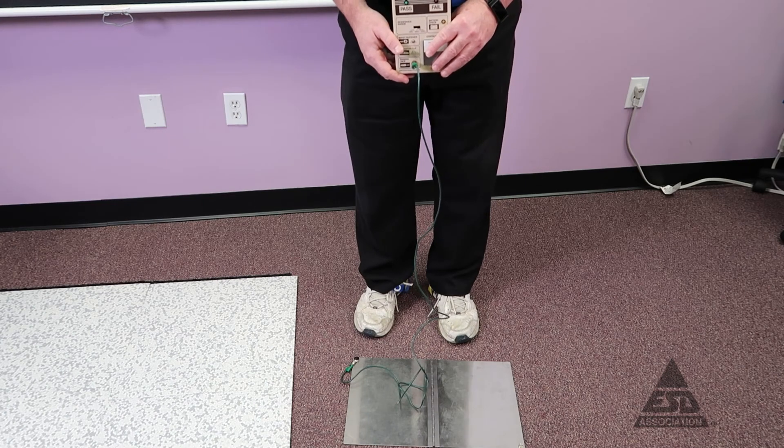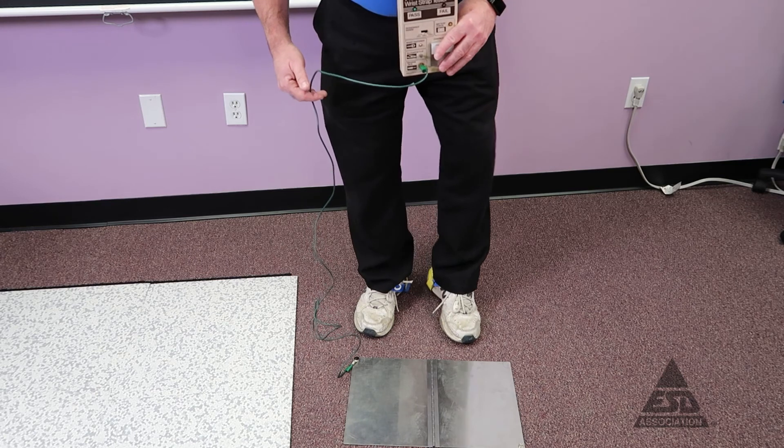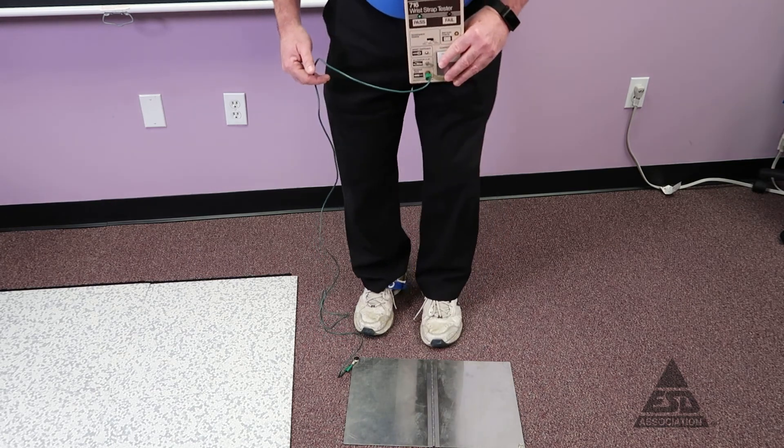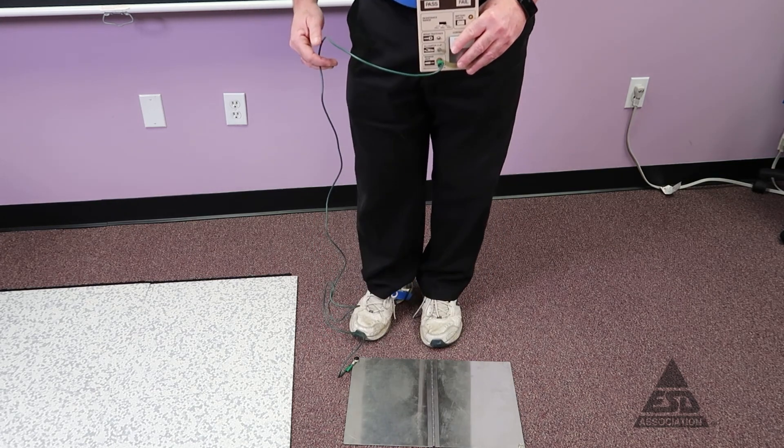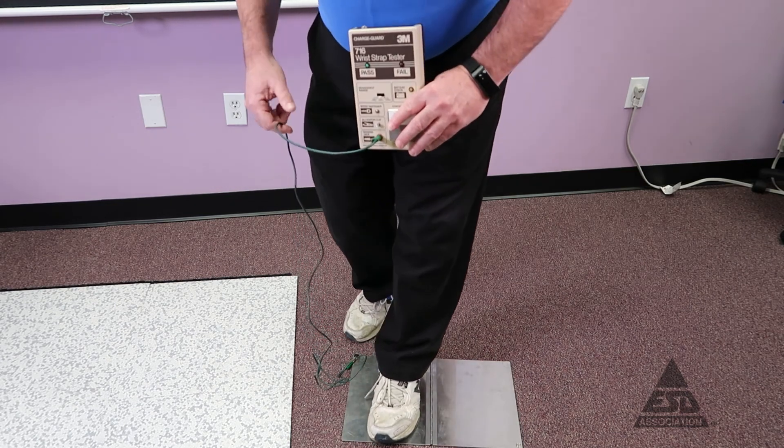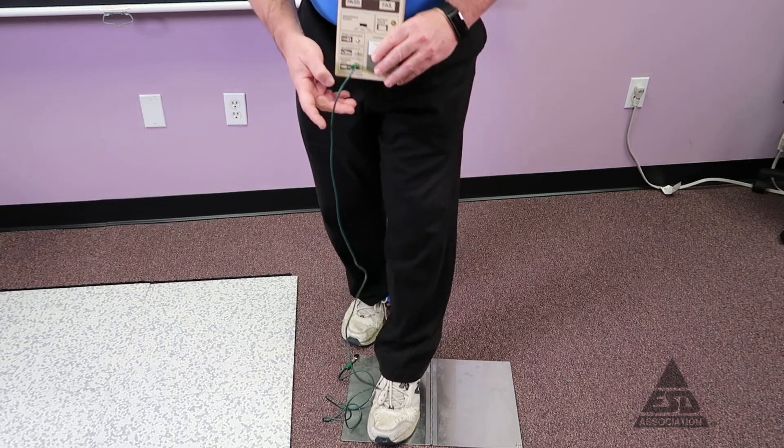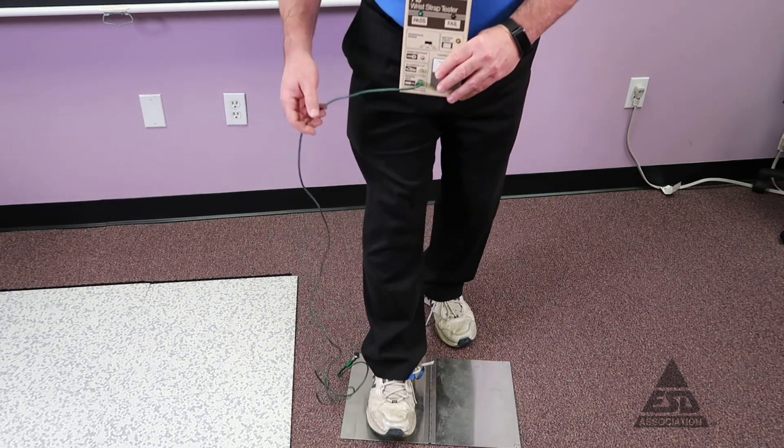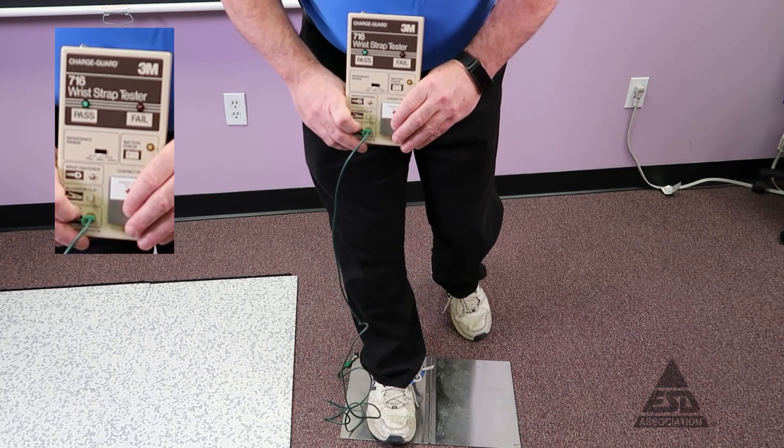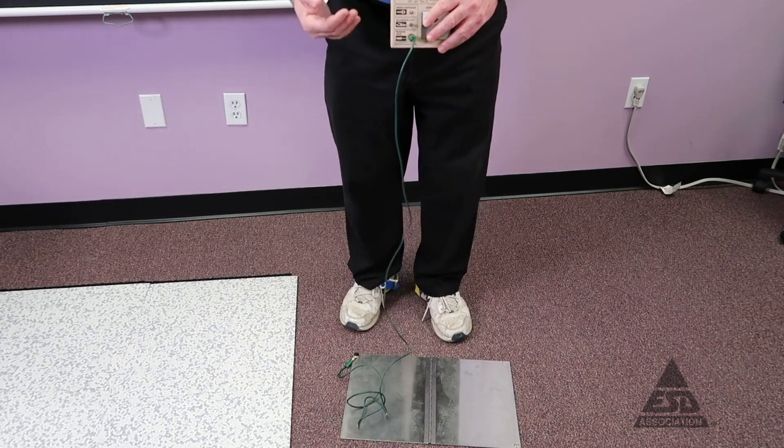If you don't use shoes, heel straps are another way people use to connect to the floor. You notice I have a heel strap on both heels. That's important. You can't wear just one, and you test them the same way you test shoes. Go on the plate. I'm going to pass on my left, put my right on here. I'm going to pass on my right. So I'm good to go with heel straps.